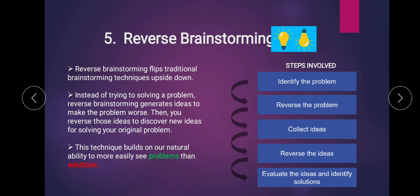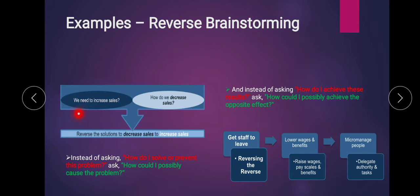The last approach is reverse brainstorming. In normal brainstorming you go from problem to solution; in reverse brainstorming you go from solution to problem — the reverse approach. For example, if you need to increase sales, first think about how you would decrease sales, and consider the various problems one could create in order to decrease sales.